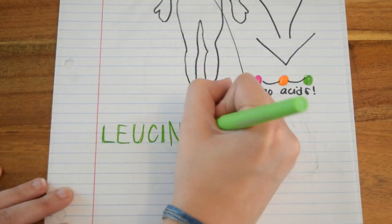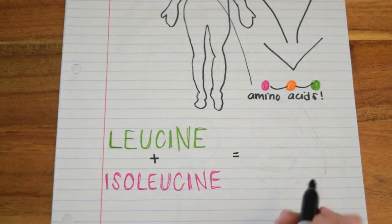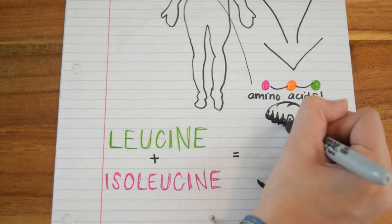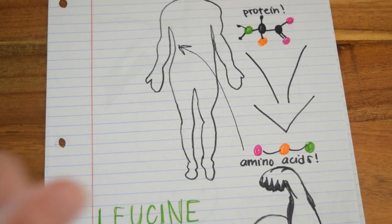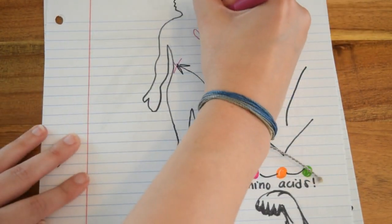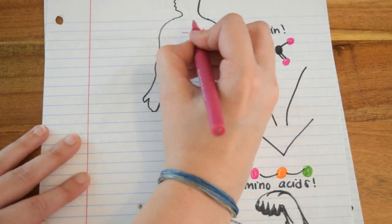Only two amino acids, leucine and isoleucine, have been shown to stimulate muscle growth. These amino acids are not processed by the liver. Instead, they head directly into the bloodstream and are used by your muscles.